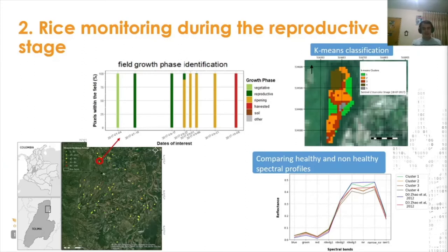For the second case, we used data collected for the northern area of the Department of Tolima, aimed at detecting inside the crop fields zones that were affected by any kind of stress during the reproductive stage. We selected a certain number of fields planted with rice, found the dates those fields were in the reproductive stage using the previously explained methodology. Using spectral data from the Sentinel-2 mission, we classified the patterns using k-means to differentiate which areas were different from each other. Finally, we averaged the spectral information for each cluster and compared them with spectral profiles referenced in literature for healthy and unhealthy rice.